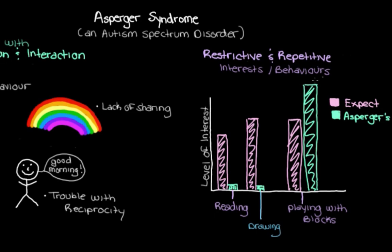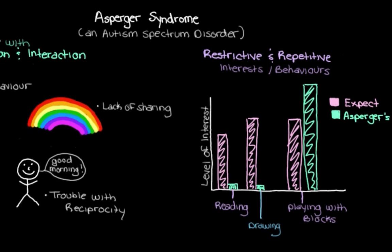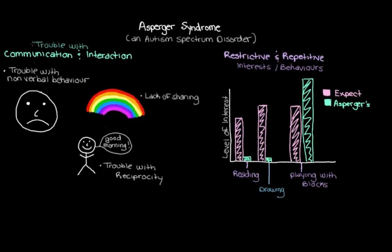When we say repetitive behaviors, we mean things like lining up toys or moving certain body parts in repetitive ways. This is also something we often see in someone with Asperger's. It turns out these main signs of Asperger's are what we use to diagnose the syndrome. There isn't really a blood test or brain scan we can use to confirm it, so we rely on looking for these behavioral signs — by asking parents questions and watching the child interact with other people.